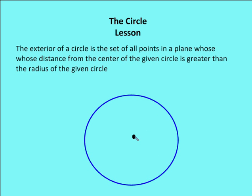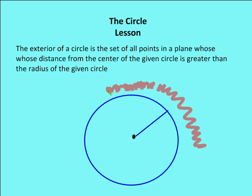The exterior of the circle is going to be the set of all points in a plane whose distance from the center of a circle is greater than the radius. So the set of all points greater than the distance from the center to the circle itself are those points outside of the circle. As long as that distance from the center to a point is greater than the radius on the same plane, that constitutes the exterior of the circle.